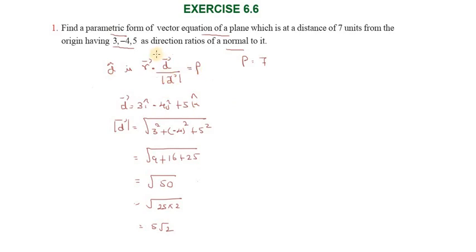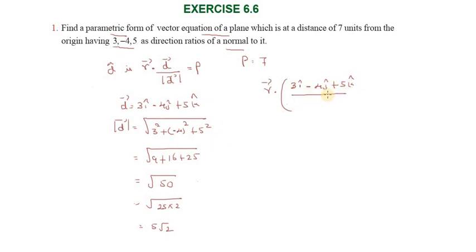Therefore, the parametric form of vector equation of the plane is: r vector dot (3i-cap minus 4j-cap plus 5k-cap) divided by 5 root 2, equal to 7. This is the required parametric form of vector equation of a plane. Thanks, students.